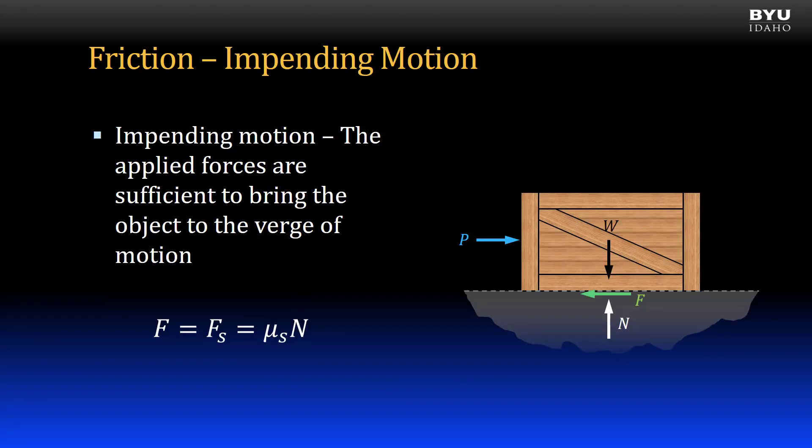In summary, if we have a condition of impending motion, then we can calculate the friction force using the static friction force equation. If we don't have impending motion, we don't use it.